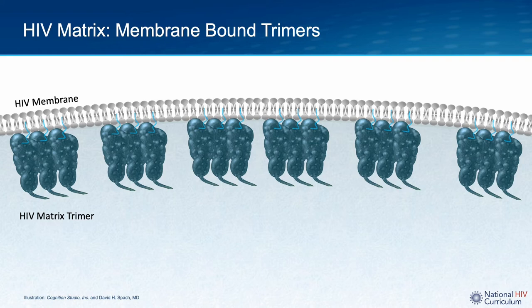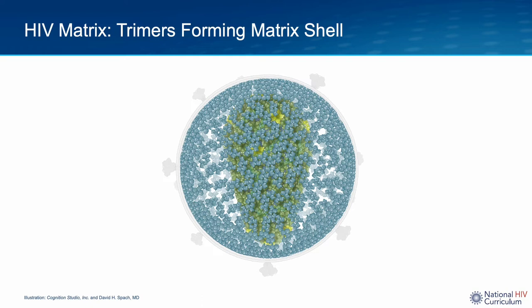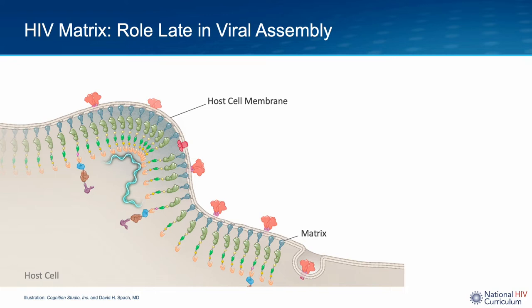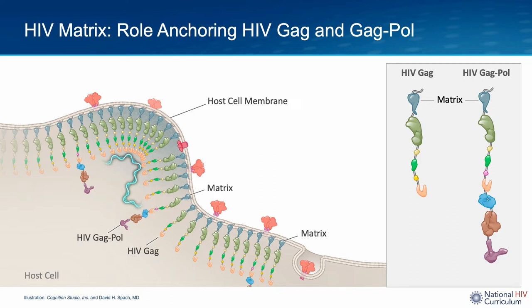In the mature HIV particle, the matrix proteins are grouped as trimers bound to the bilayer lipid membrane. Just beneath the lipid membrane, these matrix trimers interlock to form an intricate, spherical, lattice-like structure referred to as the matrix shell. The matrix shell plays an important role early in the HIV life cycle by facilitating HIV entry into the host cell. Matrix also plays a role late in the HIV life cycle during viral assembly. When matrix is synthesized, it is initially part of the HIV GAG and GAG-POL polyproteins. During viral assembly, the matrix protein anchors these large polyproteins to the inner region of the host membrane.